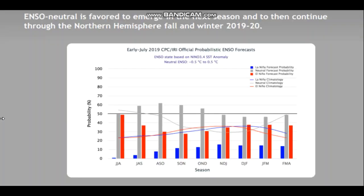So let's look at the ENSO Outlook. There is an ENSO Neutral in store to emerge in the next season and then continue through the Northern Hemisphere fall and winter 2019–2020. You can see August is most likely to be neutral, then September also neutral, and October also neutral, and it maintains. So it seems fairly safe to say there is going to be a neutral pattern in store for the fall months.